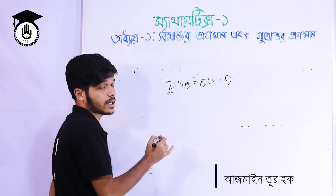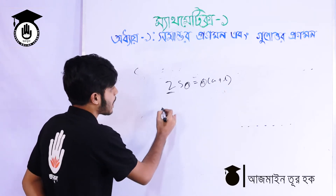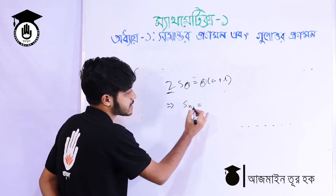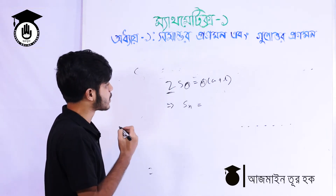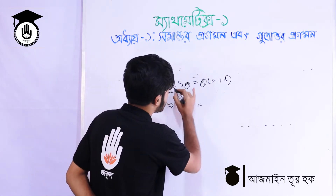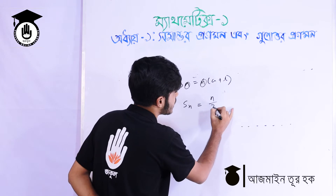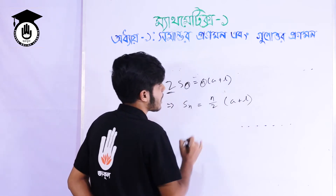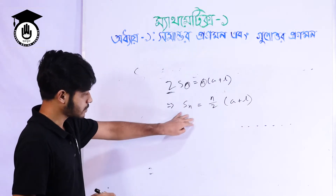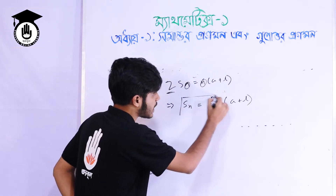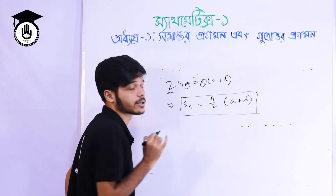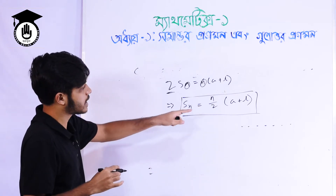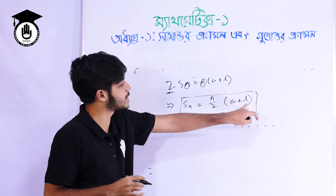The two series together give us S_n. So S_n is the same as n/2 times (a + l). That is our formula: S_n = n/2 × (a + l).